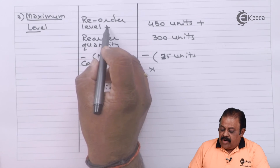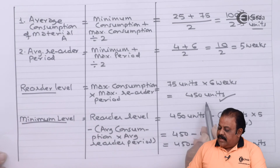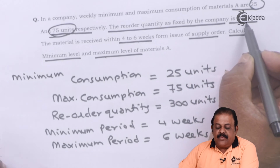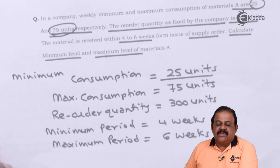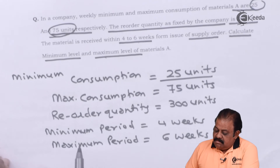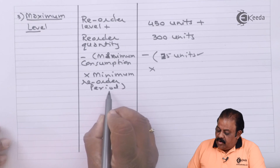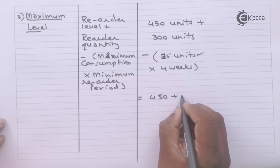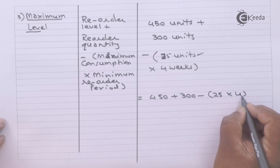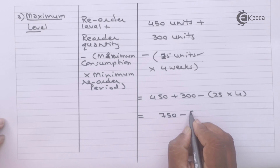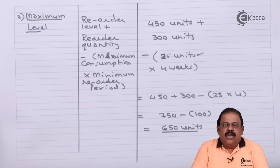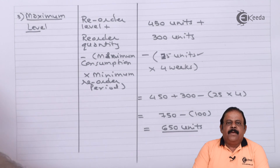So maximum level = 450 + 300 minus (25 × 4) = 750 minus 100 = 650 units. The maximum level of material A is 650 units.